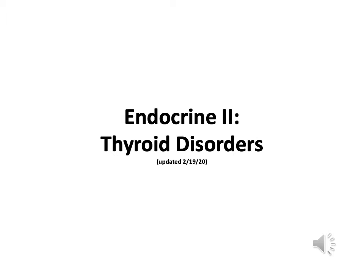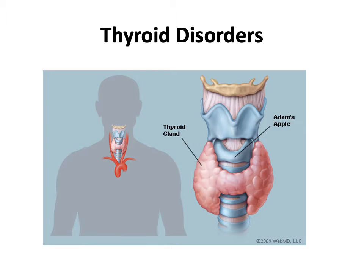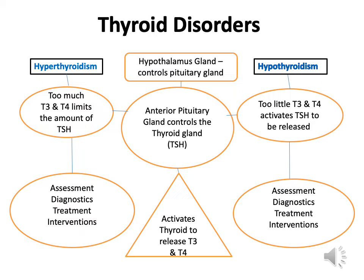The second endocrine lecture will be discussing thyroid disorders. To understand the thyroid, you must also understand what the pituitary gland controls in relationship to the thyroid. The anterior pituitary gland secretes TSH, which is related to levels of T3 and T4 that are directed and monitored by the hypothalamus.